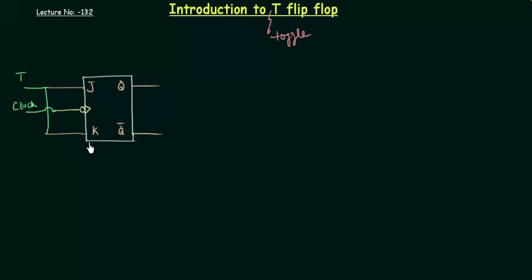In case of D flip-flop, we were having SR and we complemented the R. Now let's see the truth table for T flip-flop.